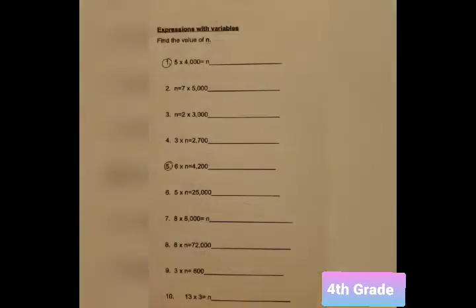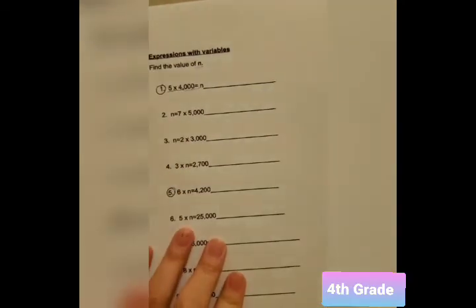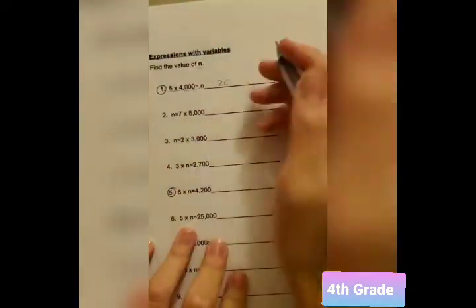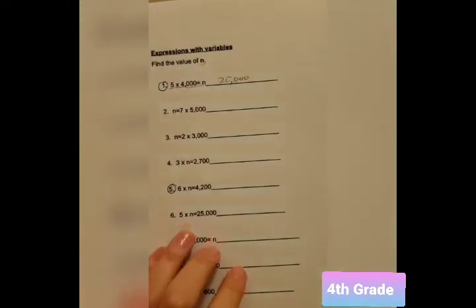Alright, on the third page, we'll be looking at expressions with variables. And I'm going to go over the question number 1 and number 5. Question number 1, we got 5 times 4,000. And as we learned on the other page earlier, on the mental math page, we just need to figure out what 5 times 4 is and add the 0s at the very end. So, 5 times 4 is 20. And we just add 3 0s to the end. And we got the answer 20,000.